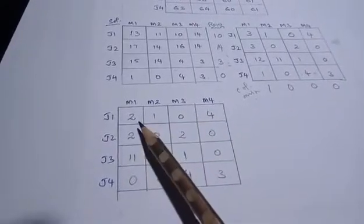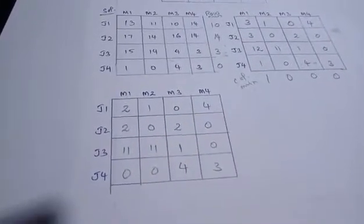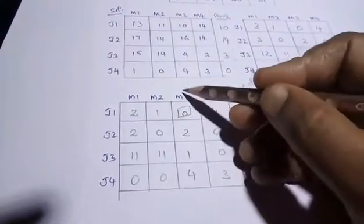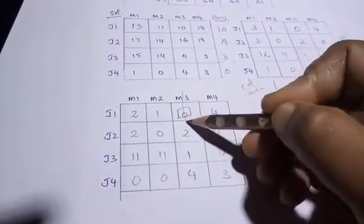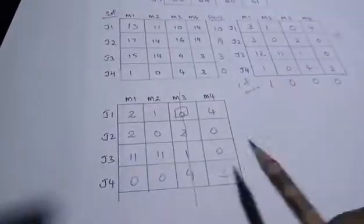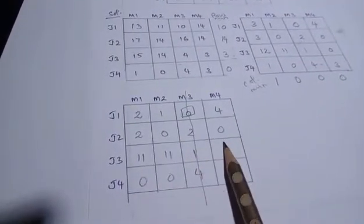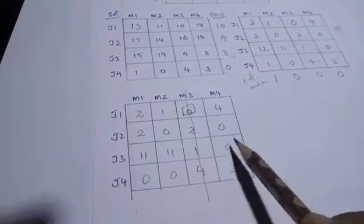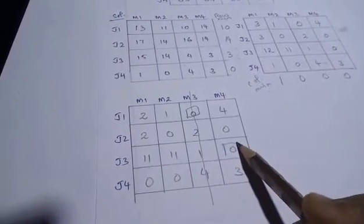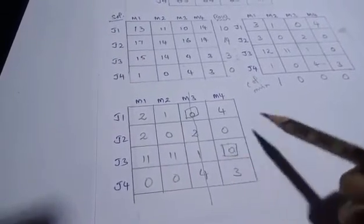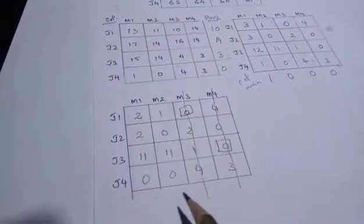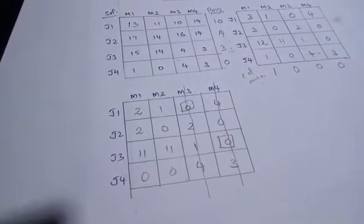Now we do row scanning — mark single zero cells. The first row has only one zero, so mark it and cut that column. The second row has two zeros. The third row again has one zero, so mark that particular cell and cut that column. That also gives us two zeros in the row.